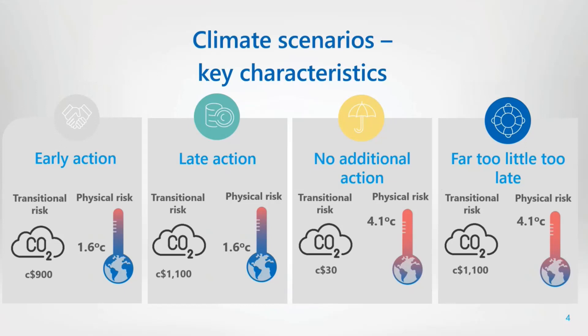An early action scenario assumes that to achieve a successful transition to a low carbon economy, early action is taken by policy makers. This results in a smooth transition that exhibits a moderate level of transitional risk but a limited level of physical risk. Carbon pricing is expected to rise to around $900 per tonne of carbon, but global temperatures are limited to 1.6 degrees by the end of the century.